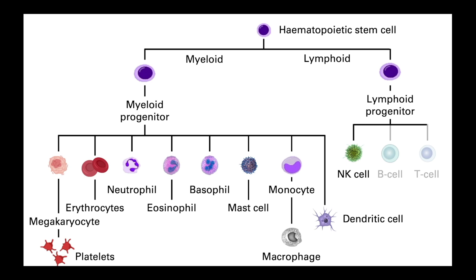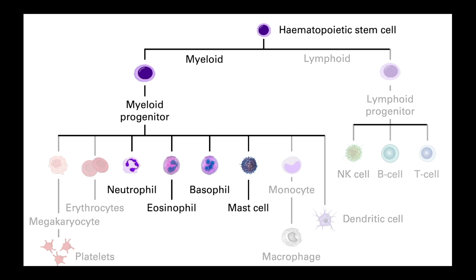The first family of cells we are going to highlight are the granulocytes, which include neutrophils, eosinophils and basophils. These all belong to a family of cells called polymorphonuclear cells because they have a characteristic multi-lobed nucleus, as well as the mast cells which lack this lobed nucleus.